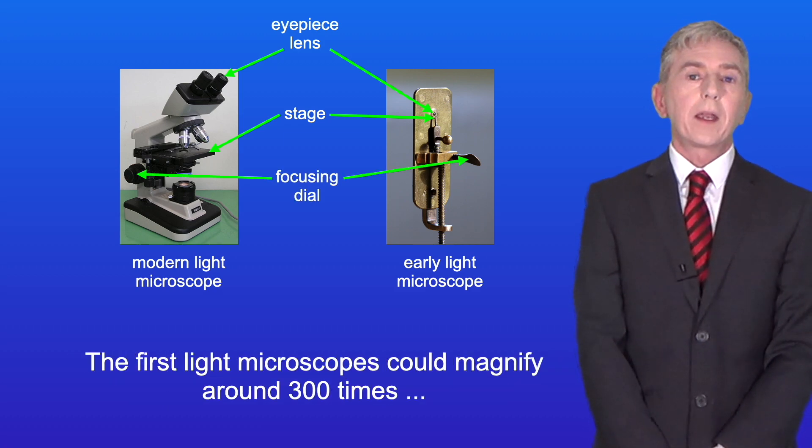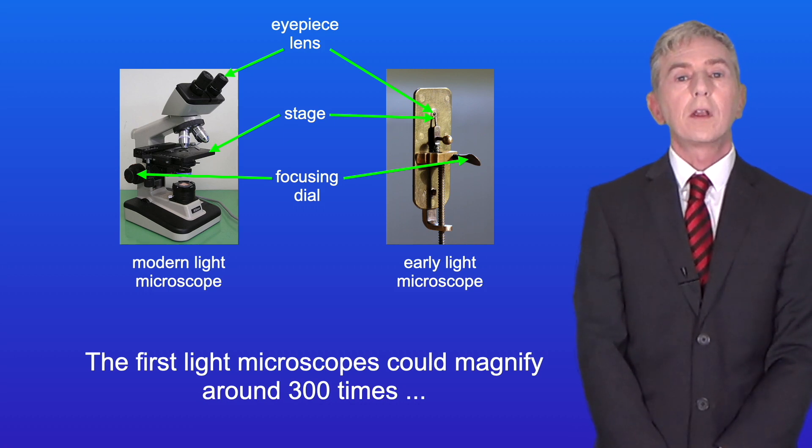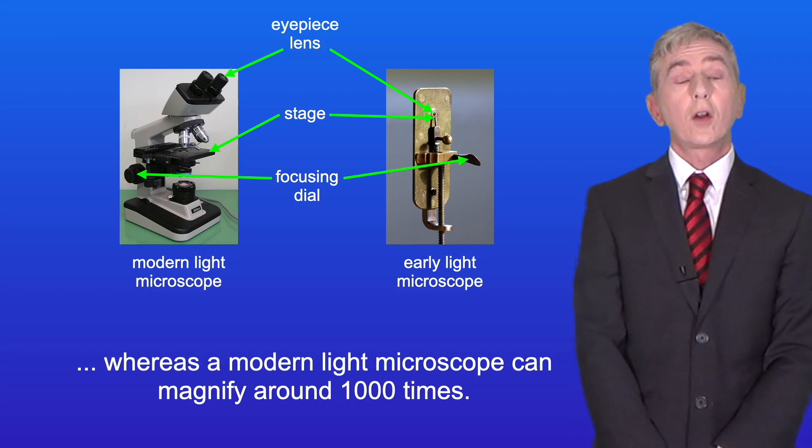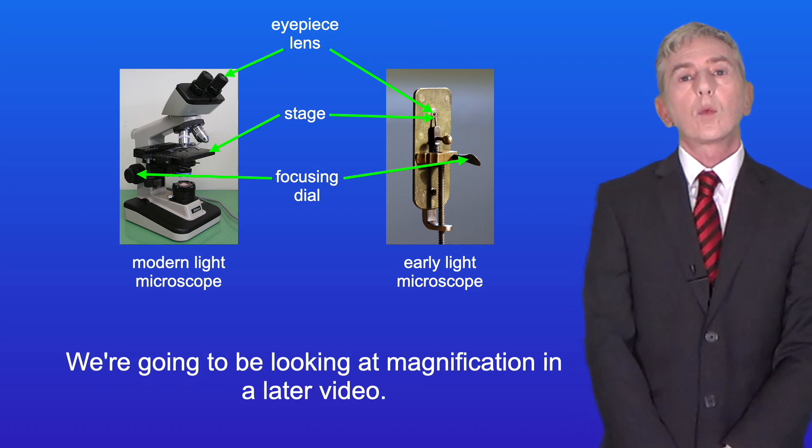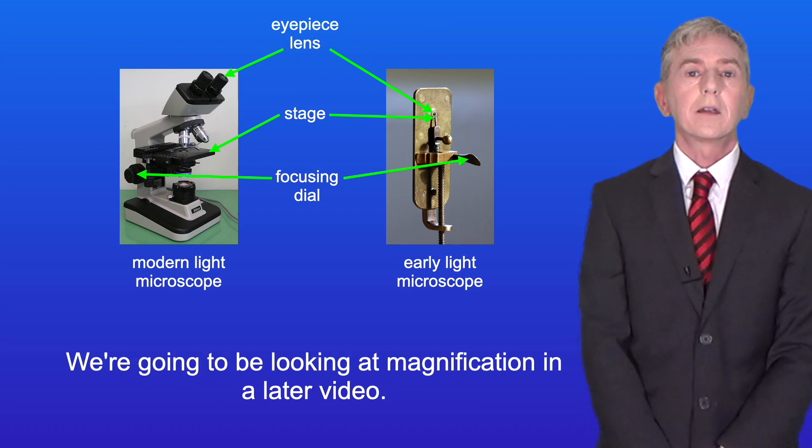Now the first light microscopes could magnify around 300 times whereas a modern light microscope can magnify around 1000 times and we're going to be looking at magnification in a later video.